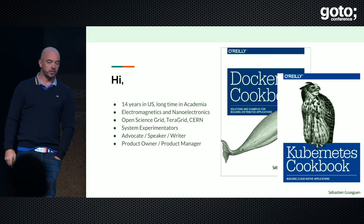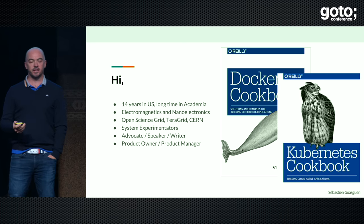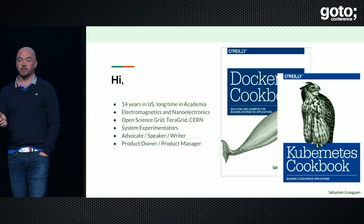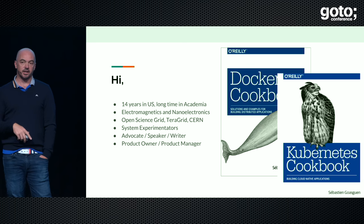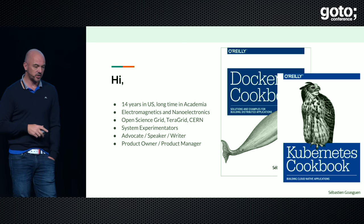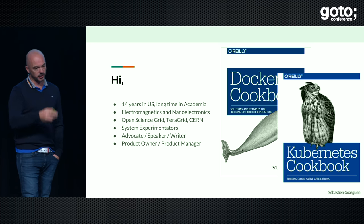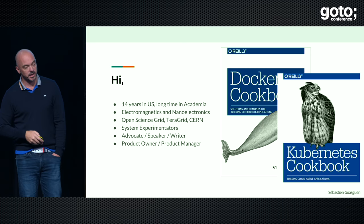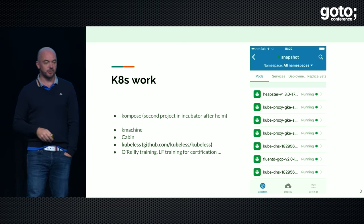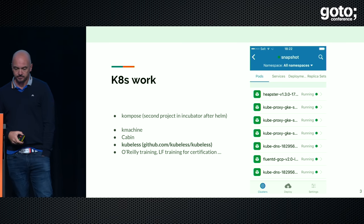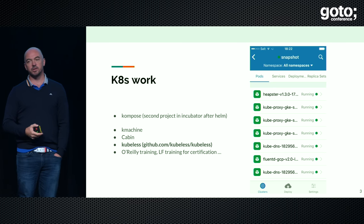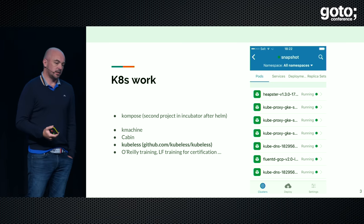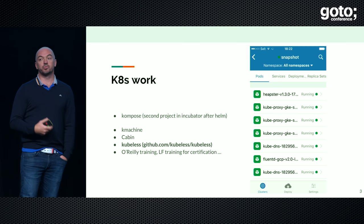In 2014, I was very curious when people got excited about containers and I had a relationship with O'Reilly, so I wrote the Docker Cookbook. While I did that, I jumped on Kubernetes because I right away saw that you needed a scheduler or orchestrator to manage containers in production. I ended up writing another book. I'm more of a researcher, experimentator, product owner, product manager type. I like to tell you a little bit about my background.